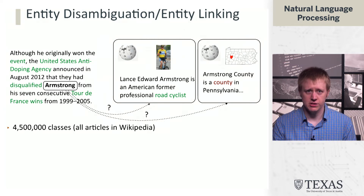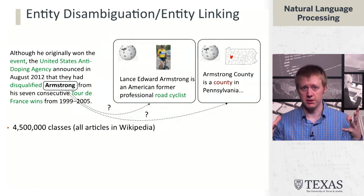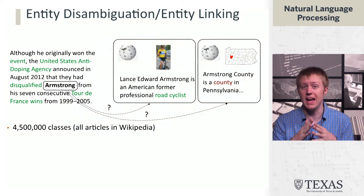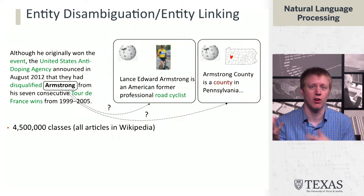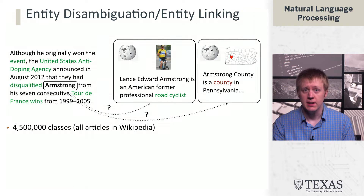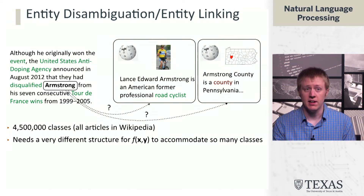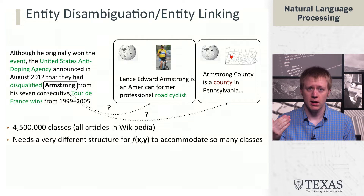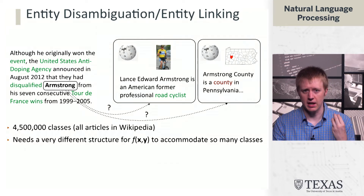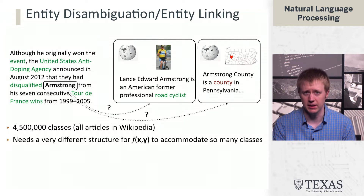The challenge here is that while you could think of entity linking as multi-class classification, there are 4.5 million classes — it could be any article on Wikipedia. In practice, we can prune that down to anything with 'Armstrong' in the title, but that still leaves a number of options. Compared to what we've seen so far, we're going to need a very different feature structure. We can't get away with conjoining indicators about the input with an indicator of the class label — we need something a little bit more complex.